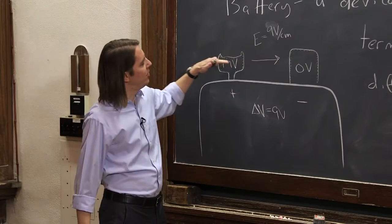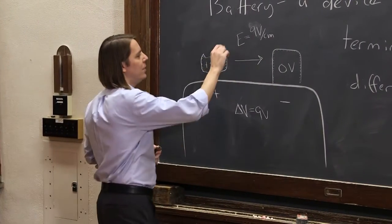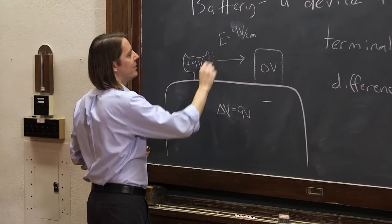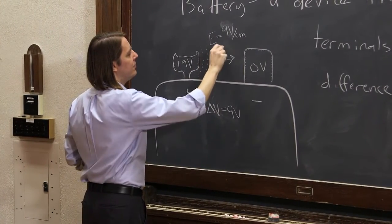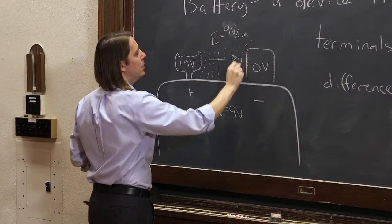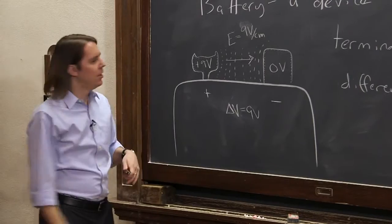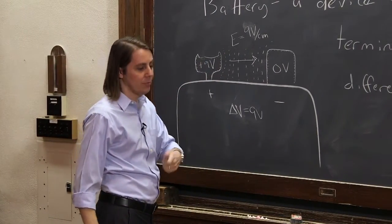And we know then also that the potential is going to go down as we go along the field. So the 8-volt line is probably something like that. 7, 6, 5, 4, 3, 2, and then the 1. So we can actually do field theory inside of a battery if we really want to.